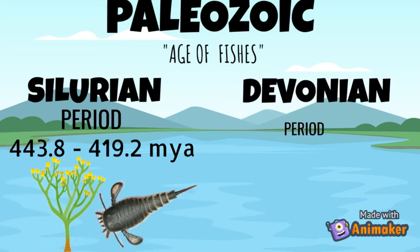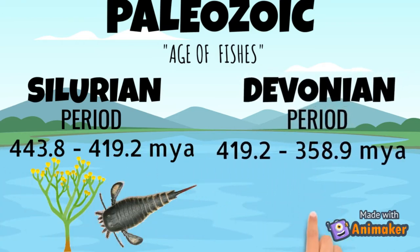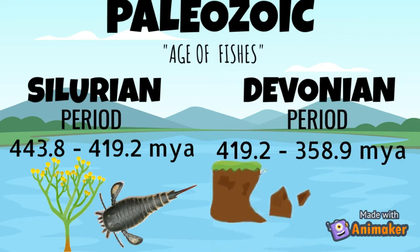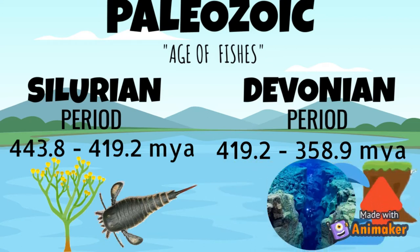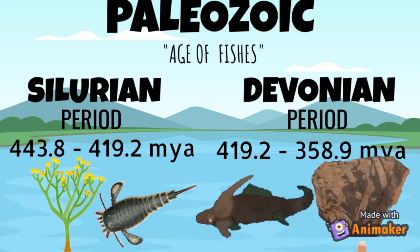The Devonian period was 419.2 to 358.9 million years ago. The rapid erosion of the Earth's mountains contributed large amounts of sediment to lowlands and shallow ocean basins, and sea levels were high, with much of western North America underwater. Marine Laspis and Stethacanthus lived in this period.